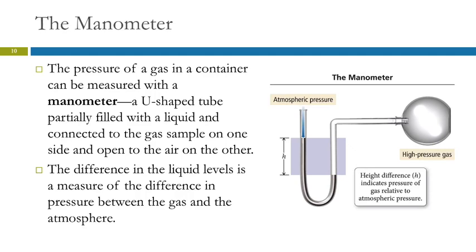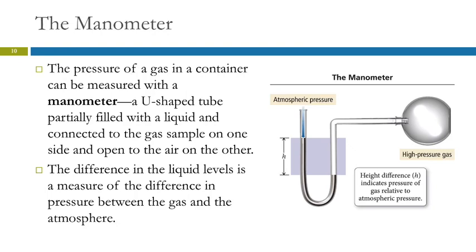Today we have all kinds of cool gadgets and different types of pressure meters, so we don't have to use mercury anymore. The reason we talk about the manometer is it helps us understand what's going on — it's not a black box giving a number. We can see that the pressure inside is pushing down on one side more than atmospheric pressure is pushing on the other. If the pressure inside was lower than atmospheric, the mercury column would be higher on the open side and lower on the container side.